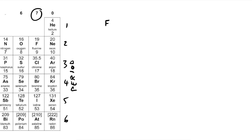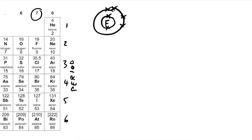Fluorine is in group seven but it's in period two, so it has two shells. The outer shell has seven electrons. That's fluorine - it's in group seven and has seven electrons in its outer shell.